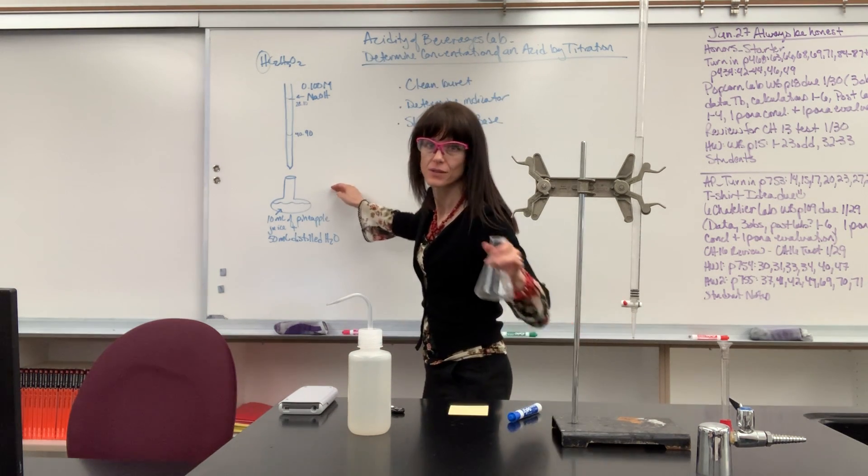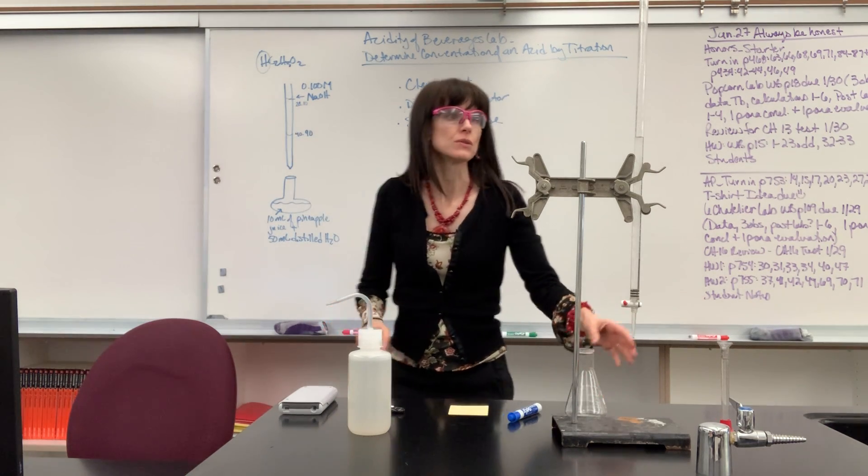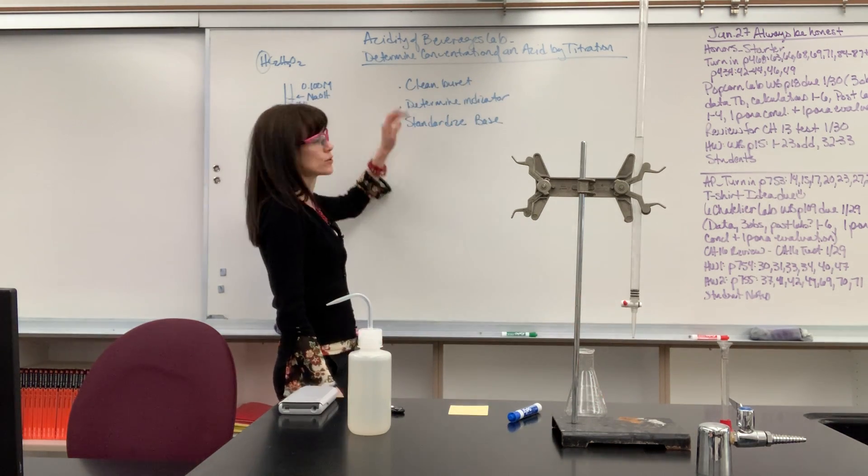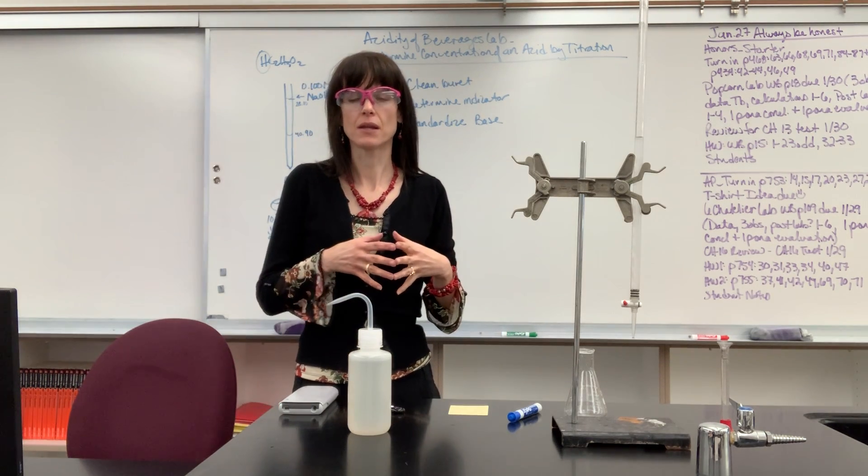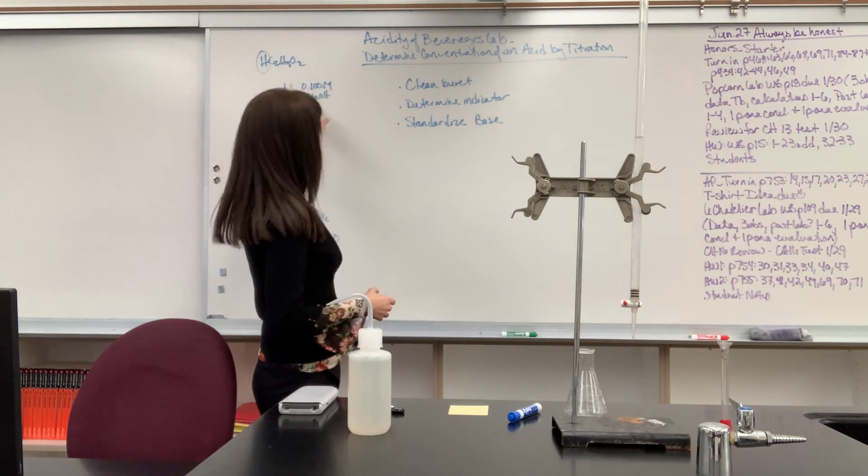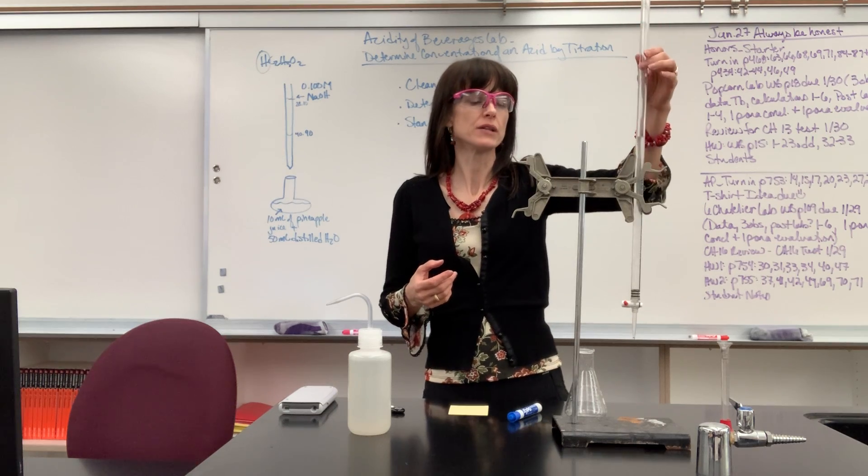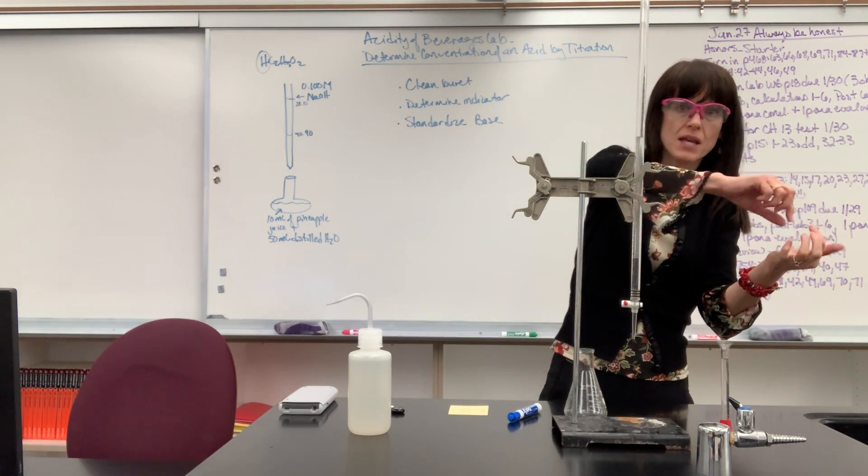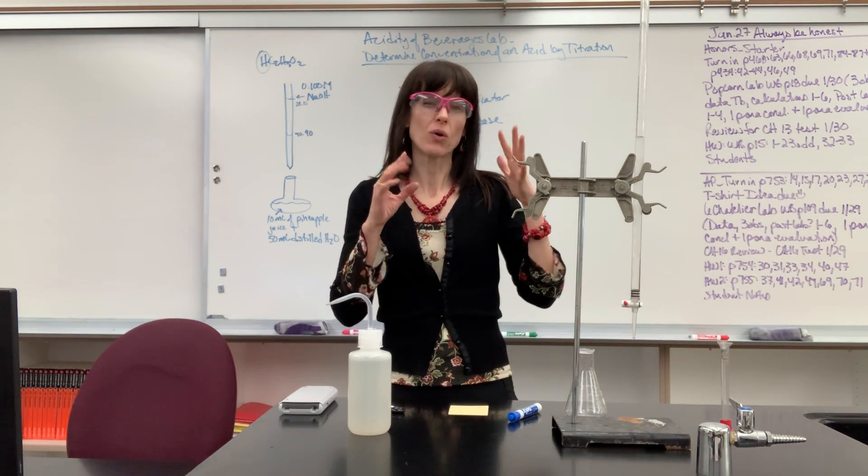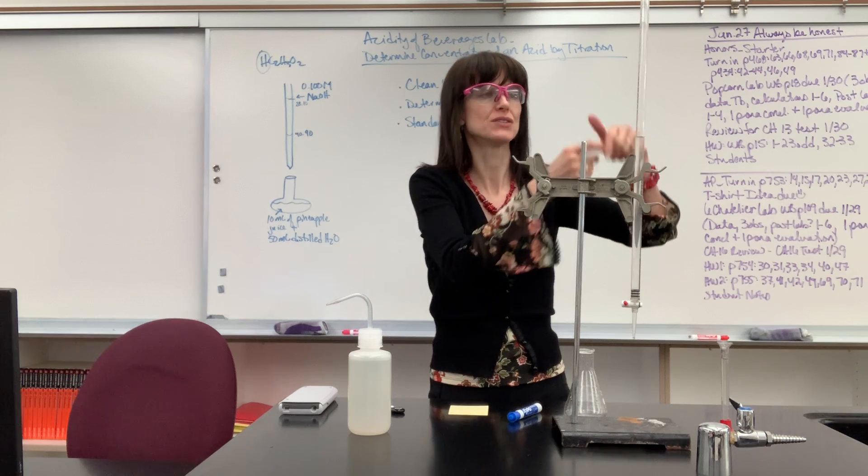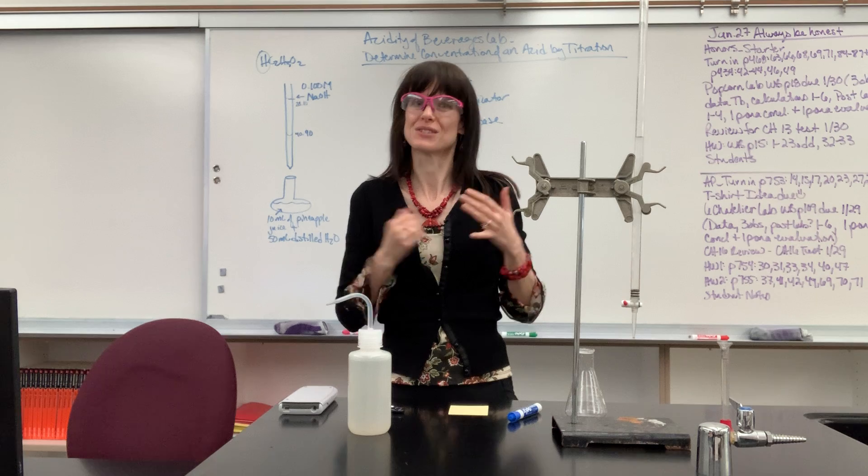Let me show you the setup. We're going to have an Erlenmeyer flask with a burette. First thing that you want to do is clean your burette. You'll clean it with hot soapy water, rinse it really good with distilled water, and then you'll take five to ten mils of your base, the sodium hydroxide. It's called washing it. You'll pour it into the burette, swirl the burette like this and pour out the sodium hydroxide into a waste container. The goal is for the sodium hydroxide to touch every bit of surface area inside that burette so the only thing inside of there is sodium hydroxide.